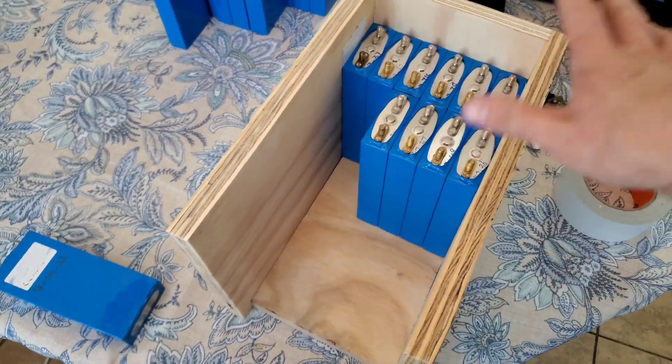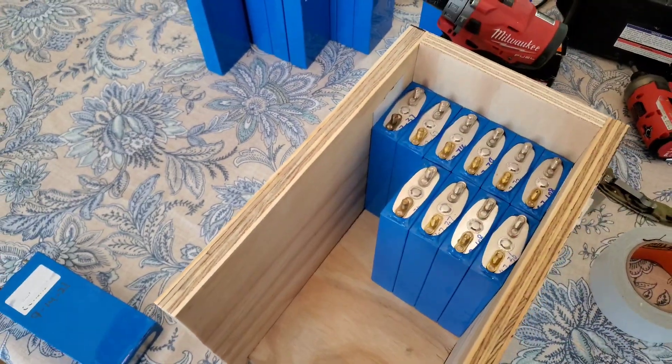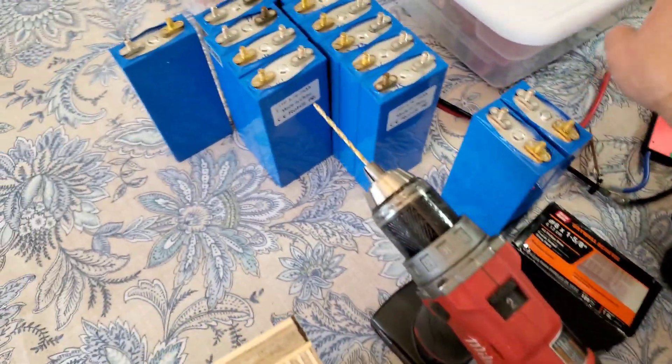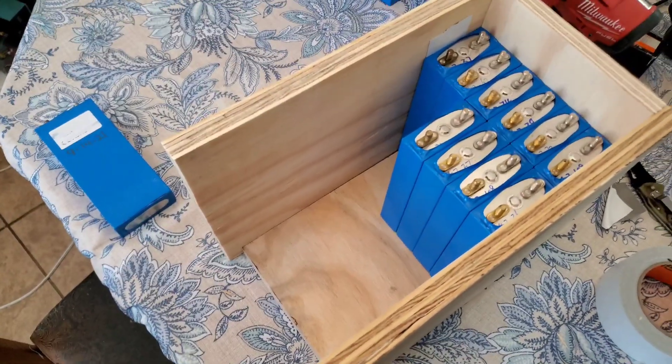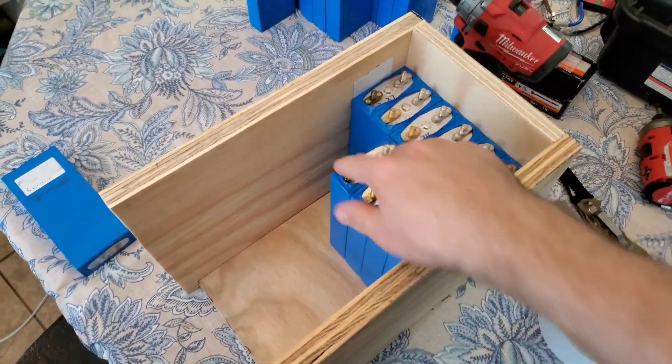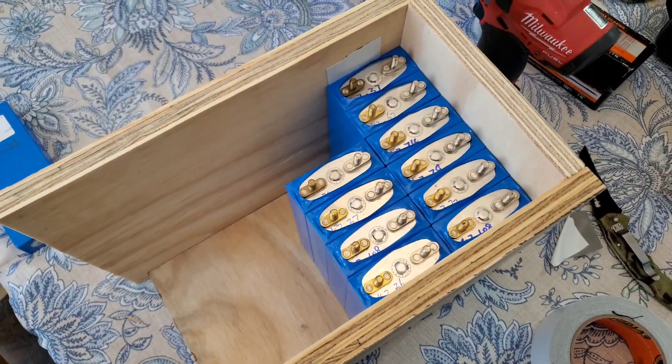I'm going to get them loaded up, positive, negative, positive. And then I'm going to make some bus bars with some copper tube I got. Then we're going to put the balance harness, which is in there, and then we're going to put the main power leads. Once I get the batteries mounted and I start making the bus bars, I'll show you guys how to do that, and hopefully you get some ideas on how to do it yourself.